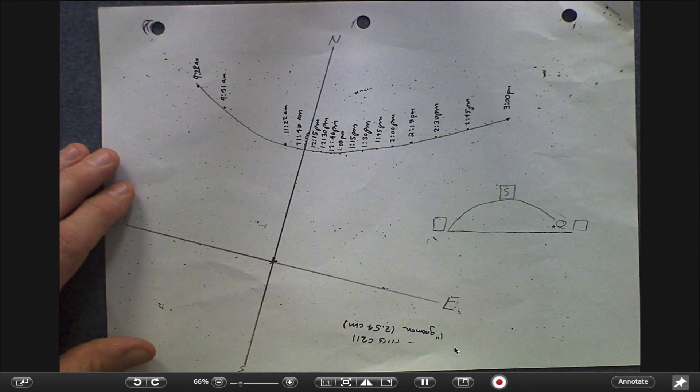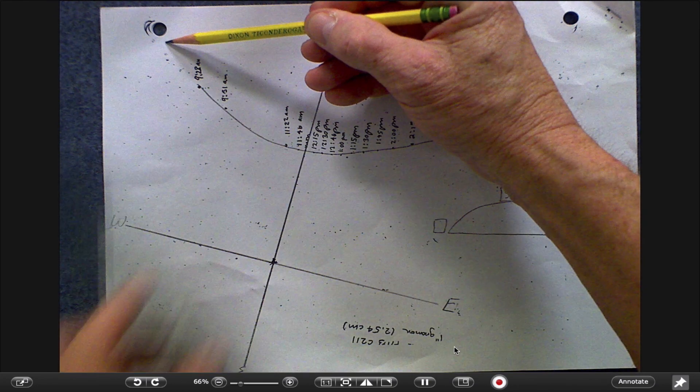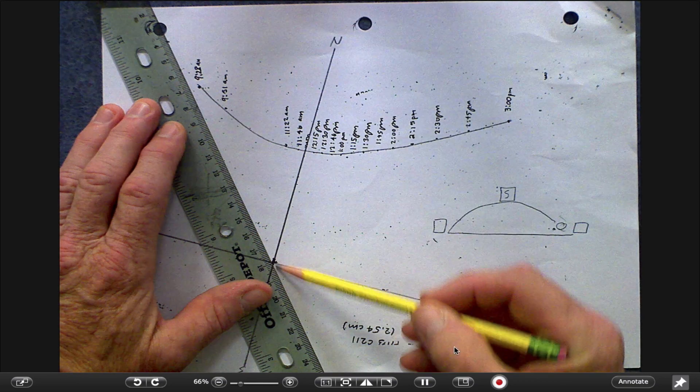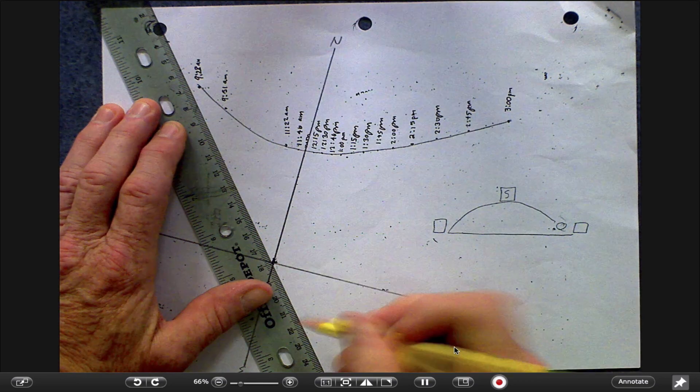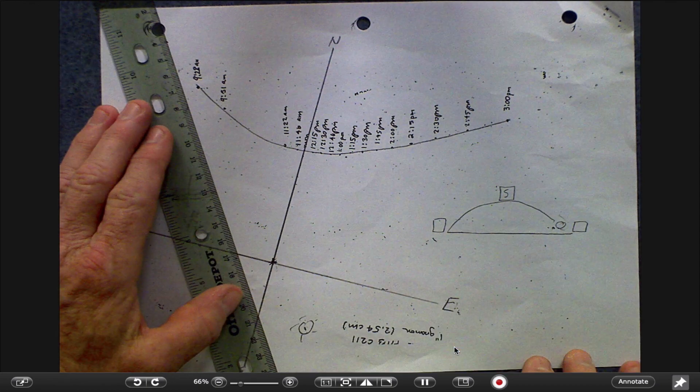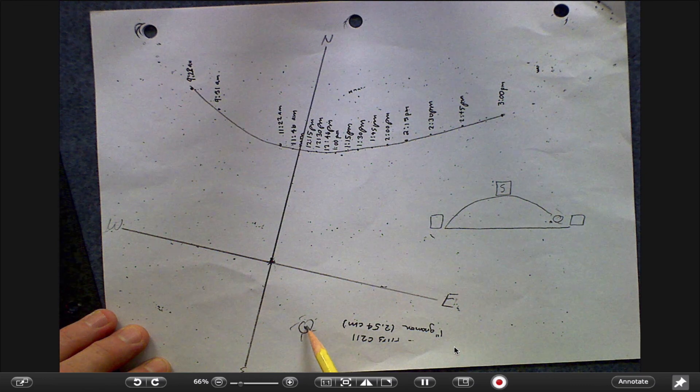But if I want to basically know where sunup is, as long as I know that it's somewhere out here, I can put my ruler on here. I can make a direct line to the gnomon, and I would know that the sun was somewhere over in that area. It might shift a little bit, but it's not going to shift much.